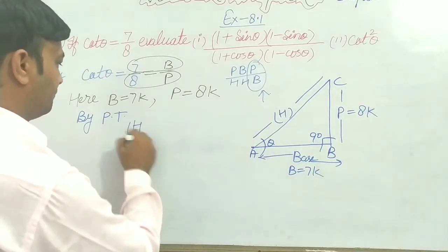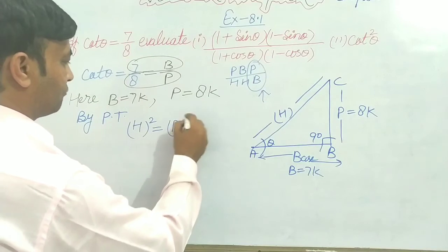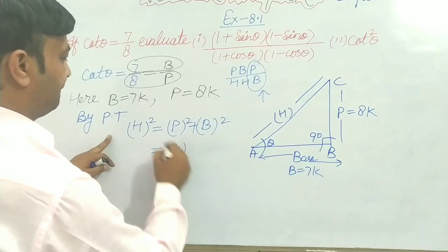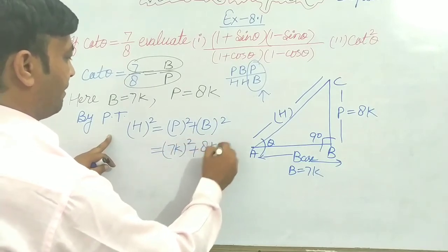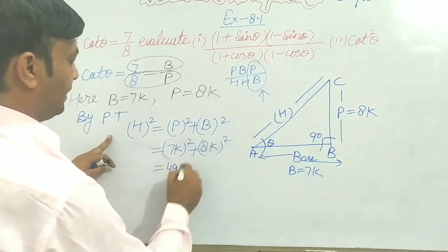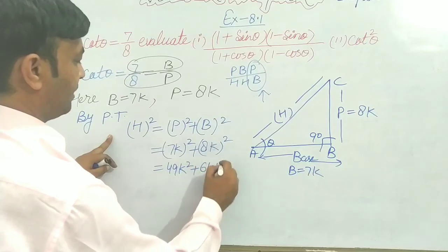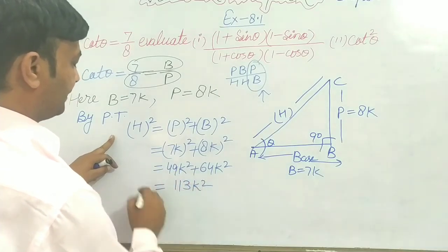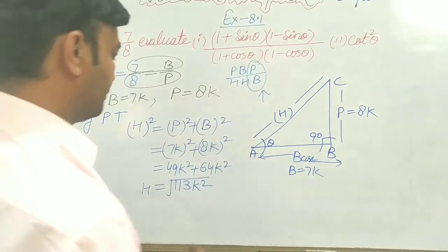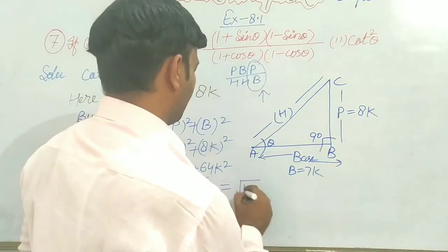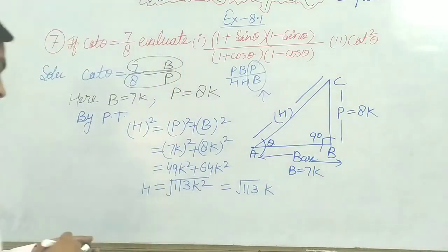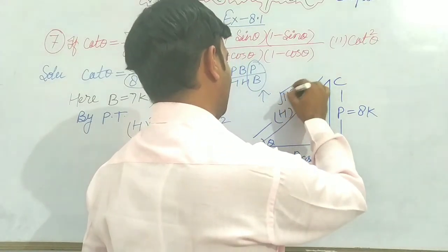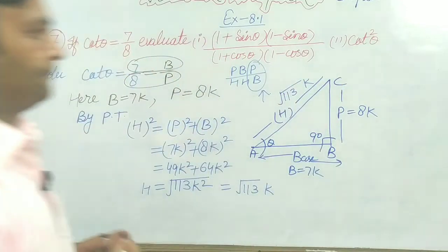By Pythagoras: hypotenuse squared equals perpendicular squared plus base squared. Substituting: (8K)² + (7K)² equals 64K² + 49K² equals 113K². Therefore, the hypotenuse equals √113 · K.